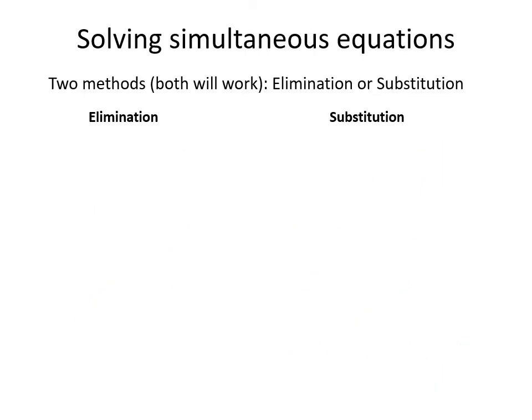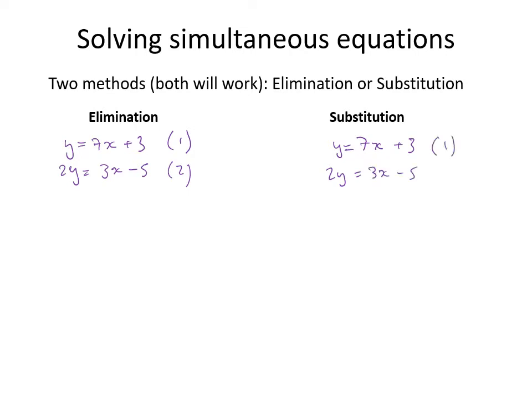There are two methods for solving simultaneous equations: elimination and substitution. I just showed an elimination method. Now I'll set up two new equations to demonstrate both methods: equation 1 is y = 7x + 3, and equation 2 is 2y = 3x − 5.